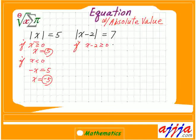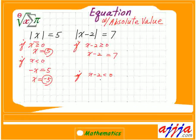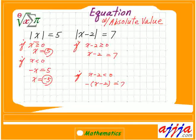If x minus 2 is greater or equal to zero, then you have the equation x minus 2 equals 7, just open it. But if x minus 2 is less than zero, then you put a negative sign in front of the whole thing, and this is going to equal 7.